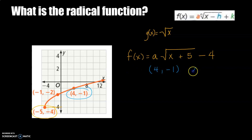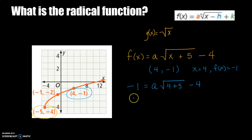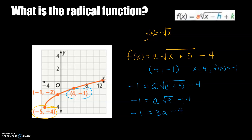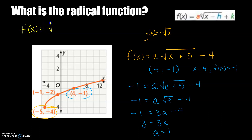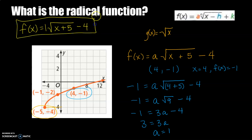To figure out what a is, I use another known point on the graph: (4, −1). Plugging in x equals 4 and f(x) equals negative 1, I get: negative 1 equals a times the square root of (4 plus 5) minus 4. That simplifies to a times the square root of 9 minus 4, which is 3a minus 4. Adding 4 gives 3 equals 3a, so a equals 1. Therefore, the equation is f(x) equals the square root of (x plus 5) minus 4.